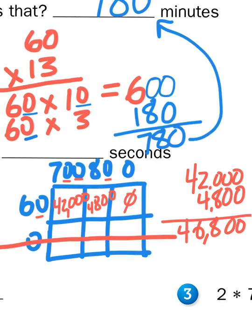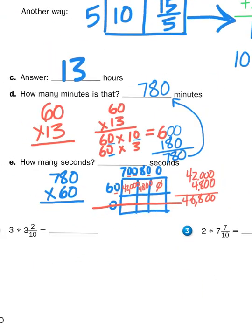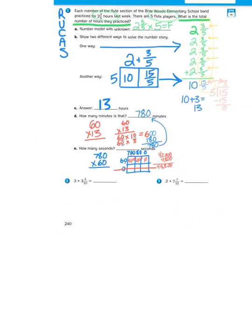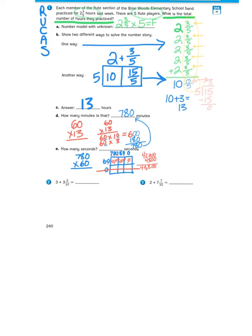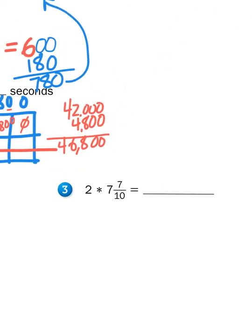And that is how I figured out the number of seconds the flute players were practicing — forty-six thousand eight hundred seconds. That's a lot of seconds! And that's basically how we approach multiplication with larger numbers and multiplication with mixed numbers. Let's try one more.